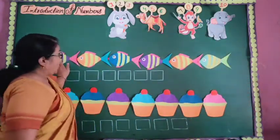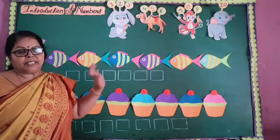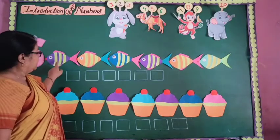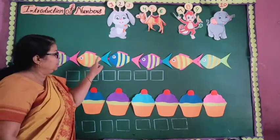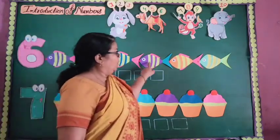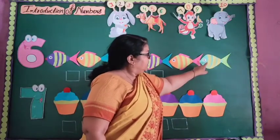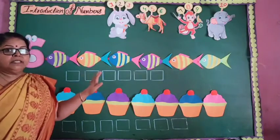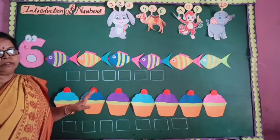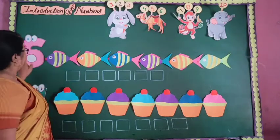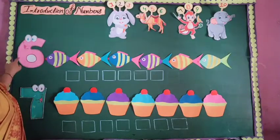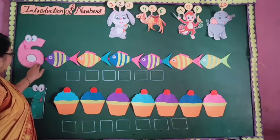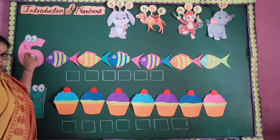How many fizzles are here? Let's count. One, two, three, four, five, six. There are six fizzles. Okay? Here is number six. So, trace the number six like this.